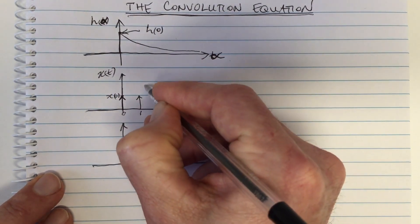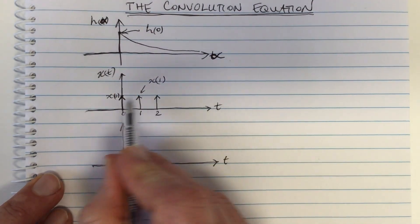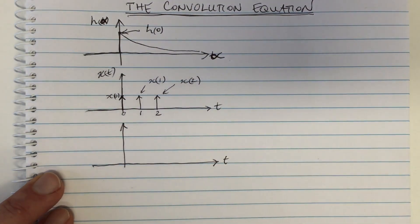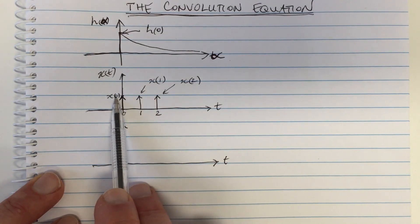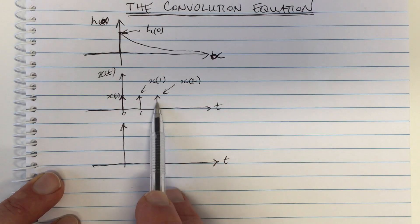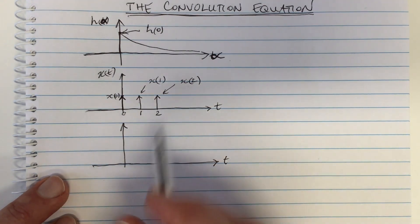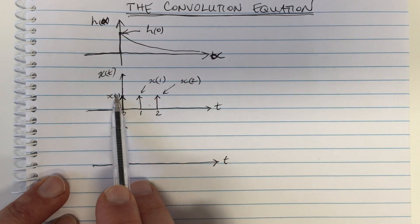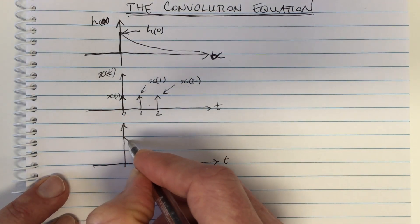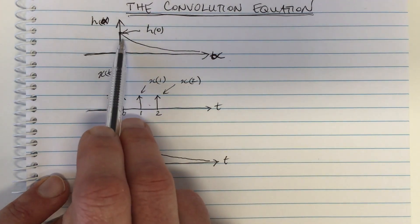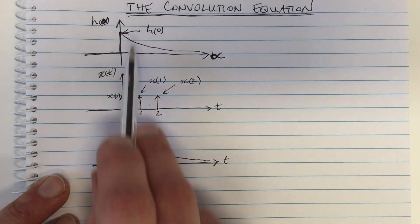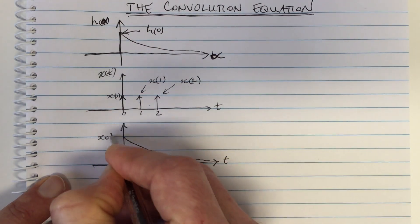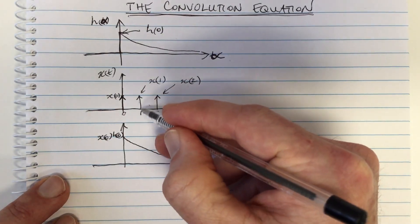The height of this impulse is x of zero, the height of this one is x of one, and I've drawn them all the same height, though they could be different in different examples. The value of x at time zero is x(0), at time one is x(1), and at time two is x(2). So in this system, this impulse response is going to cause the system to jump up to x(0) times h(0) and then start dying down, because if you hit it with an impulse of height x(0), it gets multiplied by the impulse response height.